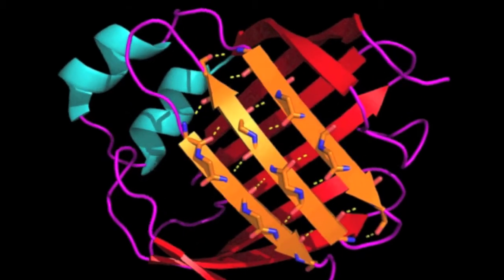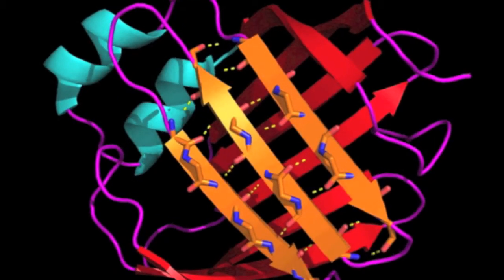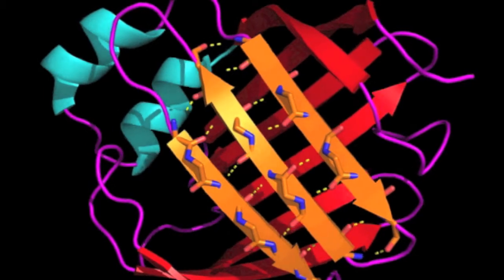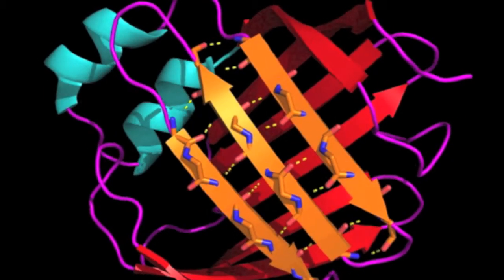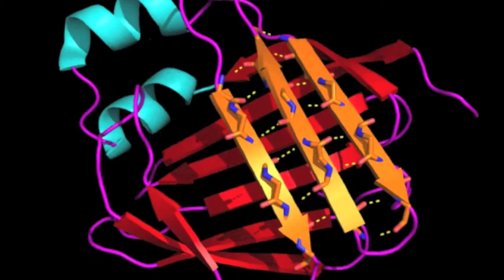This is a very regular beta-barrel structure. It's an up-and-down beta-barrel, where each strand in the barrel is hydrogen-bonded to the strands that precede and follow it in sequence.